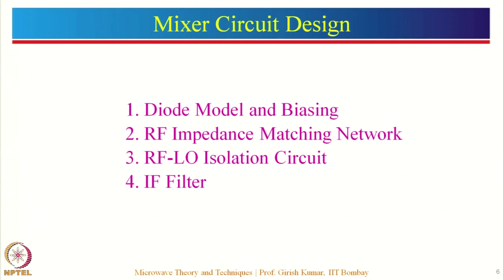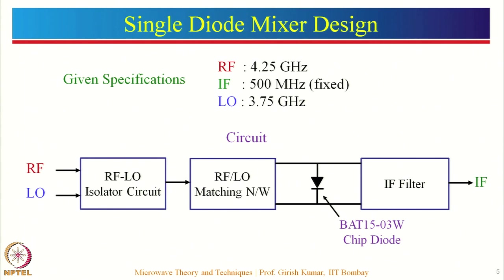The sequence in the design that we are going to follow is: first, model the diode in this platform. After that, we will see the input reflection coefficient at the RF frequency and based on that design the matching network. Then we will design the RF and LO isolation circuit. We will simulate and see the spectrum output at the output of the mixer, then accordingly design the IF filter to filter out undesired frequency components and finally get the IF output.